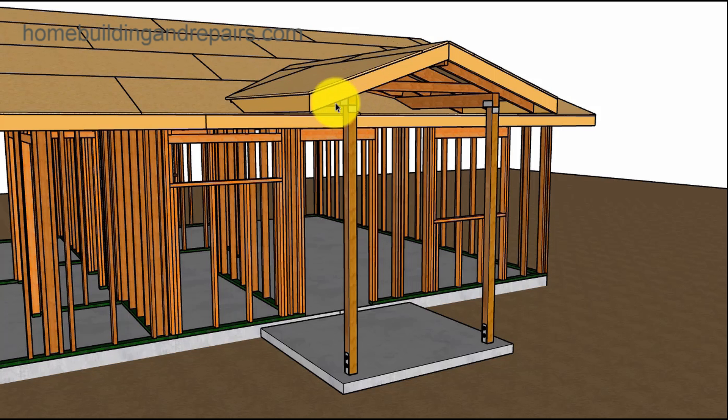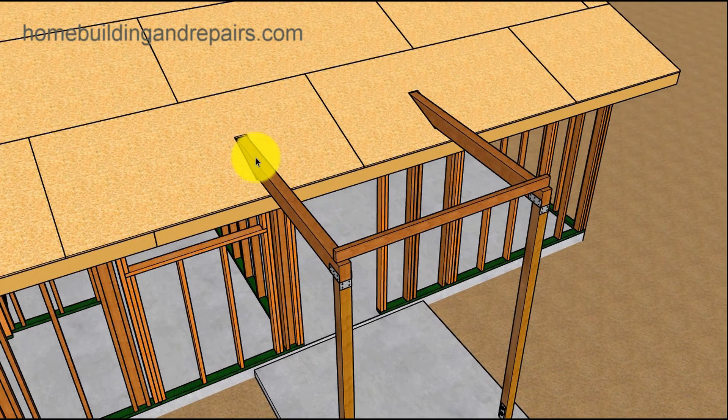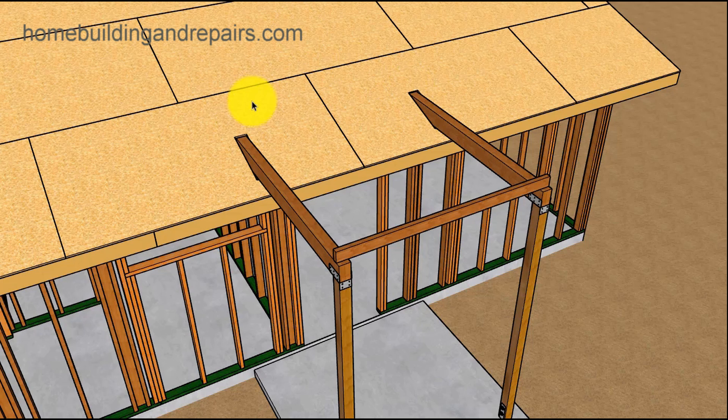But here you can see where the gable roof porch goes up a little higher. It sits on top of the house. It's really not sitting on top of the roof. It's still sitting on top of the beams here. A portion of it, a small portion of it will be sitting on top of the roof.